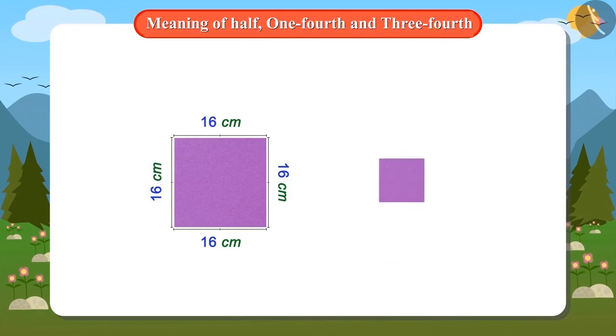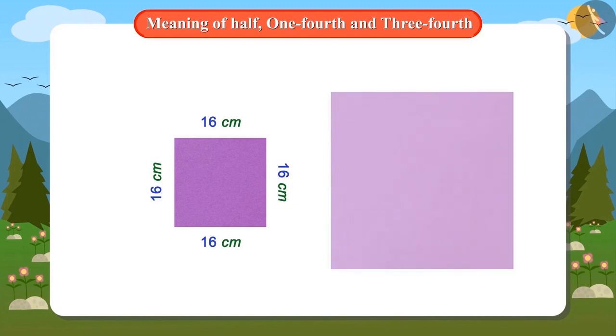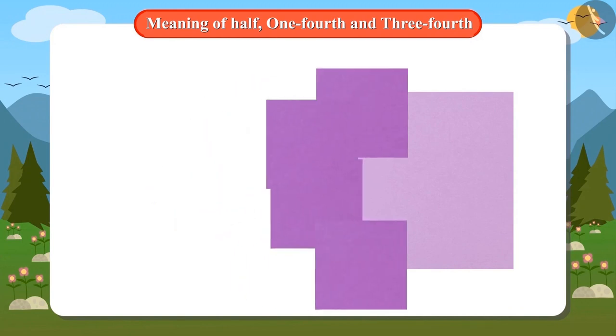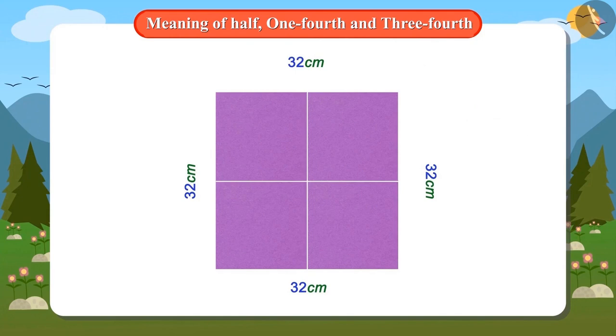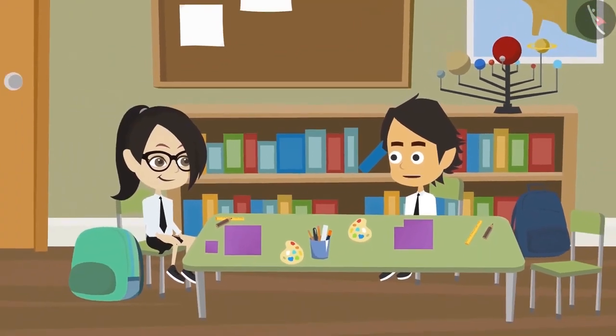Whereas, all the sides of the cardboard I had cut are 8 centimetres. Now, if we cover four parts equal to this part with sides 16 centimetres and cover this cardboard, then it will be completely covered. This means it is a quarter of this cardboard. Now I have understood properly.